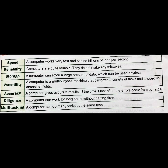A computer works very fast and can do billions of jobs per second — this is called speed. Computers are quite reliable and do not make mistakes. A computer can store a large amount of data, which can be used anytime — this is storage. A computer is a multi-purpose machine that performs a variety of tasks — this is versatility. A computer gives accurate results all the time; most errors come from our side — this is accuracy. A computer can work for long hours without getting tired and can do many tasks simultaneously — this is called diligence.